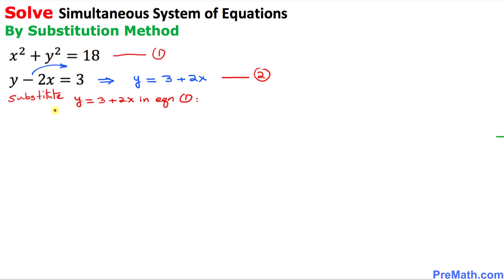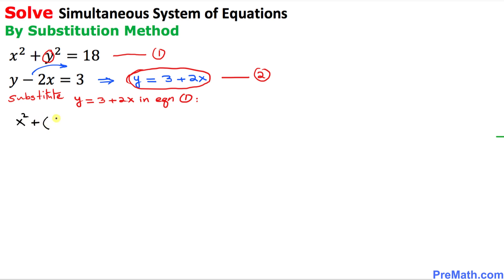Now in this next step I am going to substitute this y equals to 3 plus 2x value in equation number one. That means wherever we see the y part, I am going to replace it by 3 plus 2x. So equation number one simply becomes x squared plus (3 plus 2x) squared equals to 18.